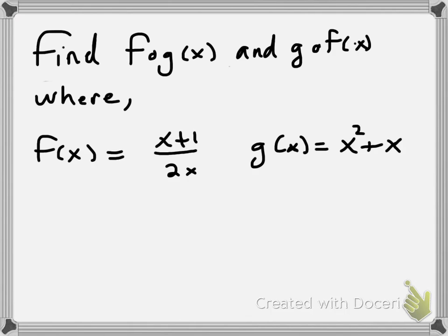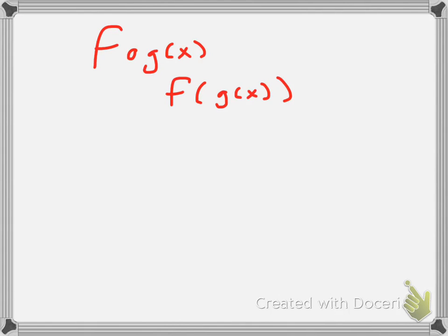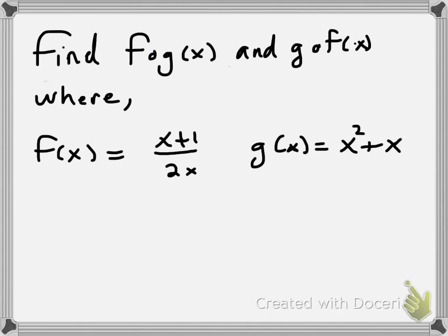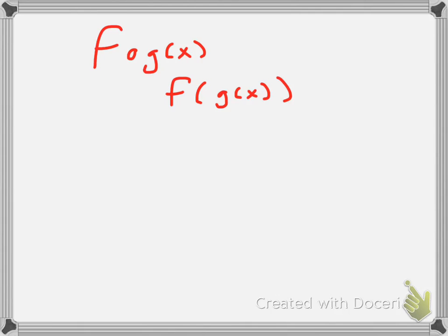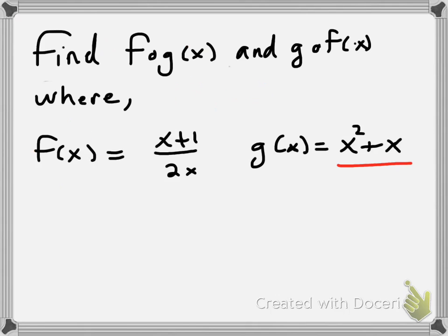So going the first way means I want to find f of g of x, or in other words, as you can see here, it means I put g inside the f function. So that means g will go inside of f. So, I'm going to say again, here's my f function, which is x plus 1 over 2x. And into that I'm going to put x squared plus x.